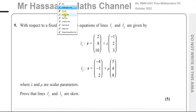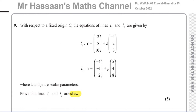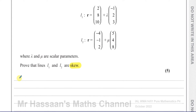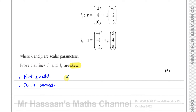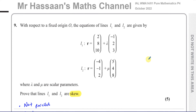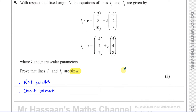What does it mean by skew? Two lines are skew — and this can only occur with three-dimensional vectors. Skew means two things: first, they are not parallel, and second, they do not intersect. So if we can prove that they are not parallel and that they don't intersect, then we have proved that they are skew. Either lines are parallel, or they intersect, or they are skew — that's the third option.